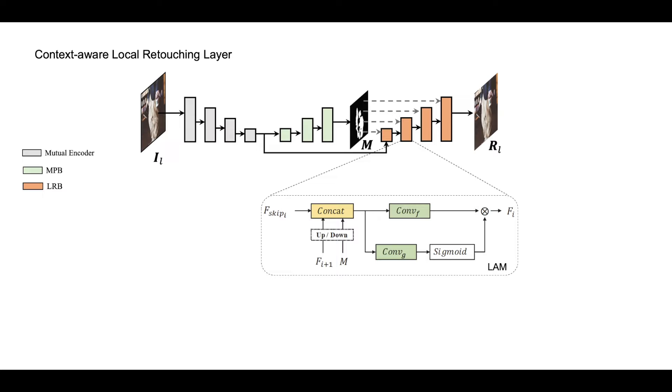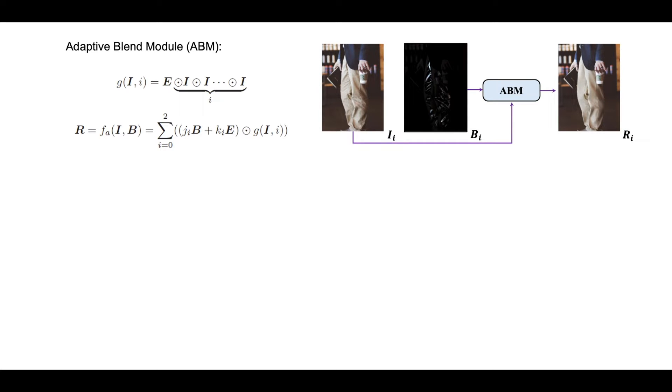Through joint training, the global context and semantic information can be better perceived. LRL achieves local retouching on a low-resolution image, and the following objective is to extend the result to a larger scale while simultaneously enhancing its detail fidelity.